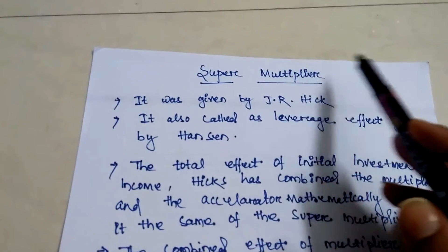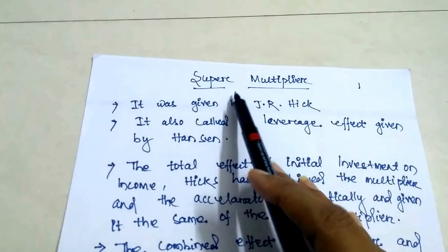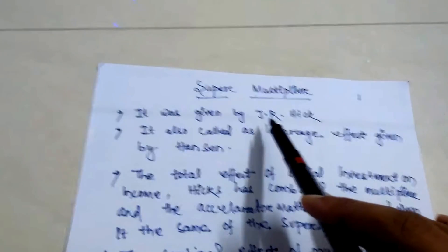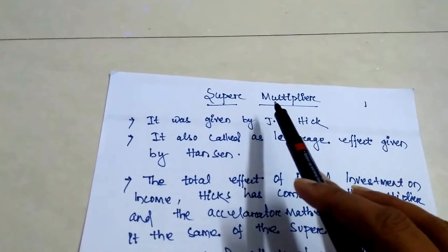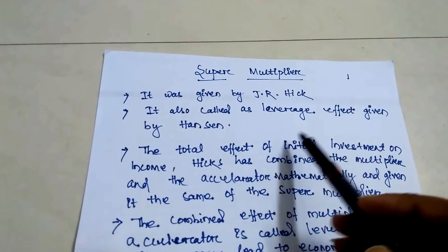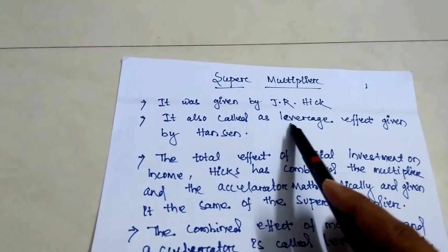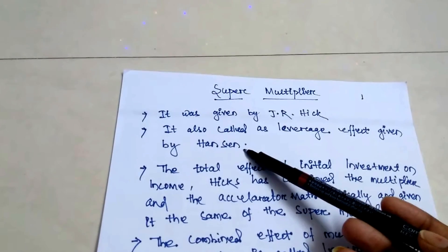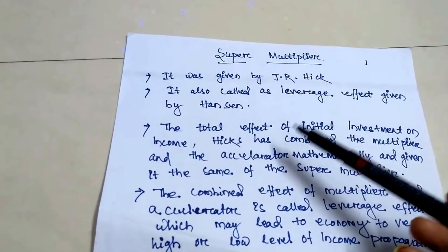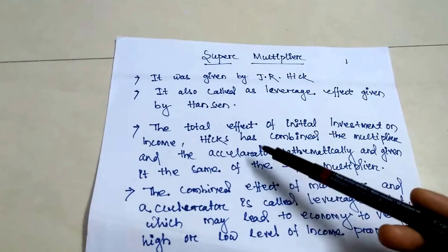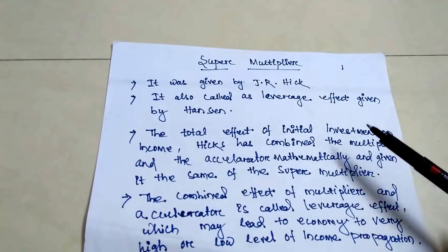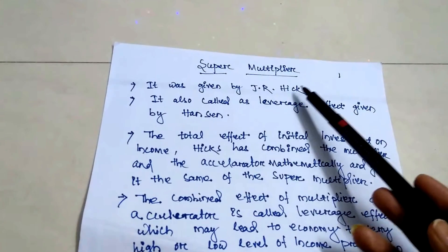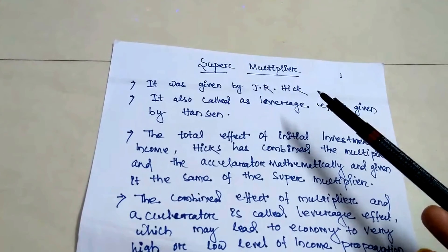After studying the multiplier and accelerator, we now discuss the super multiplier. The super multiplier was given by J.R. Hicks — economist John Robin Hicks — for the first time. It is also called the Labrace Effect, given by Hansen. The super multiplier is the total effect of initial investment on income, and it is the combination of the accelerator and the multiplier.